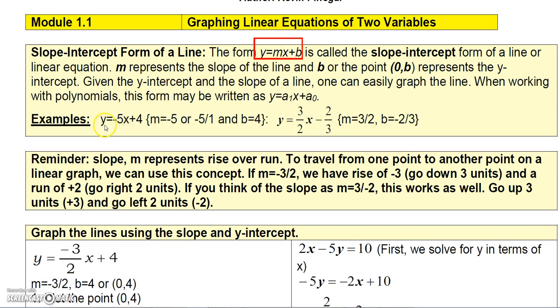Just a couple quick examples here. If you write a line in this form, y equals -5x plus 4, then that tells you the slope would be -5, since that's the coefficient of x, and the y-intercept would be 4.